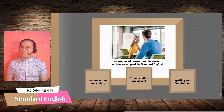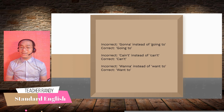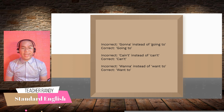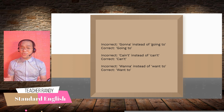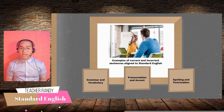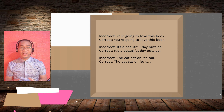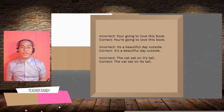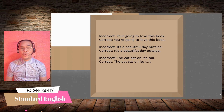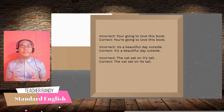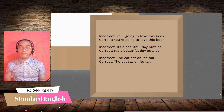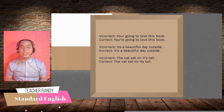For pronunciation and accent, we don't say 'gonna'; instead, we say 'going to.' We sometimes say 'can't' with a different accent rather than the standard 'can't.' For spelling and punctuation: we don't write 'your going to love this book' with Y-O-U-R; instead, we write 'you're' with Y-O-U-apostrophe-R-E. And we don't write 'its a beautiful day outside' with I-T-S; it should be I-T-apostrophe-S: 'It's a beautiful day outside.'